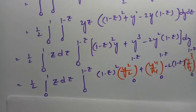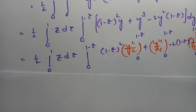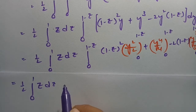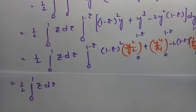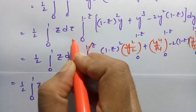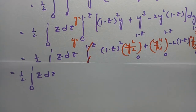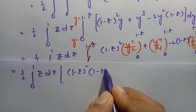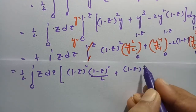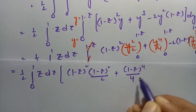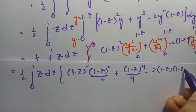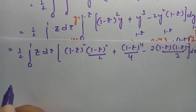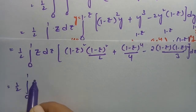Substituting each limit here: this will be one-half times integral 0 to 1 of z dz, and after substituting the y limits we get (1 minus z) squared by 2 plus (1 minus z) to the power 4 by 4, minus 2 times (1 minus z) times (1 minus z) cubed by 3, times dz. So if I again multiply through, this will be one-half times integral 0 to 1 of z into (1 minus z) to the power 4 by 2.